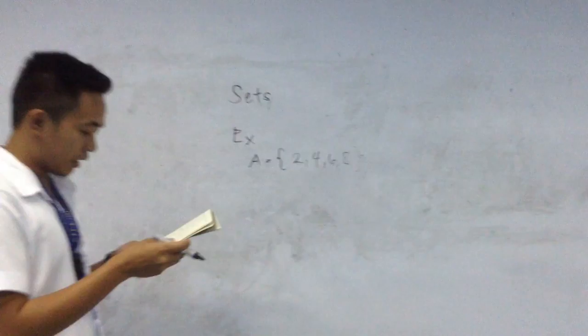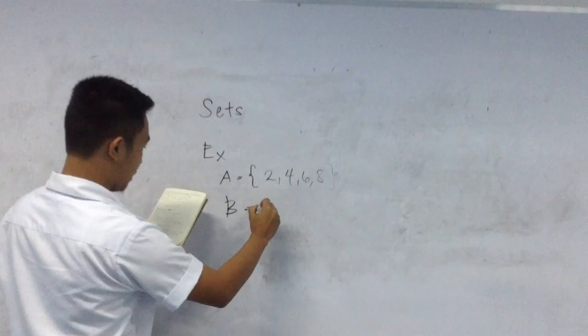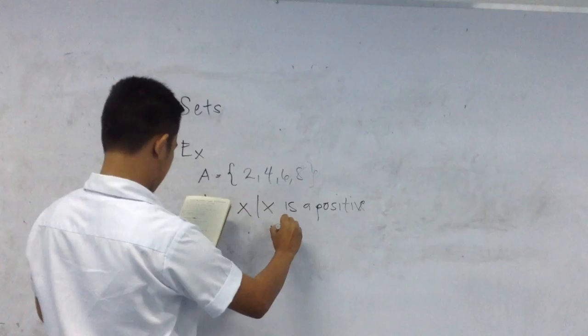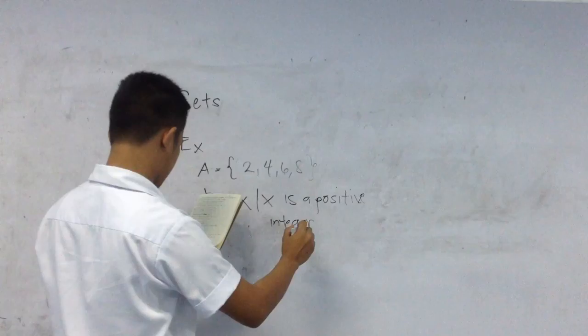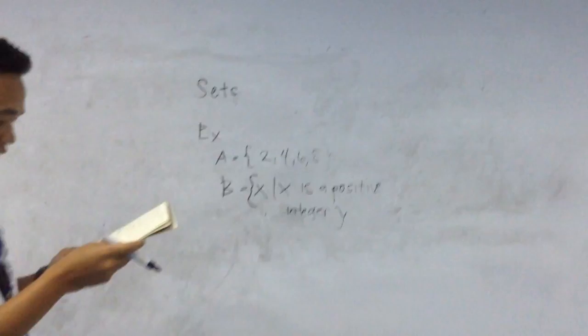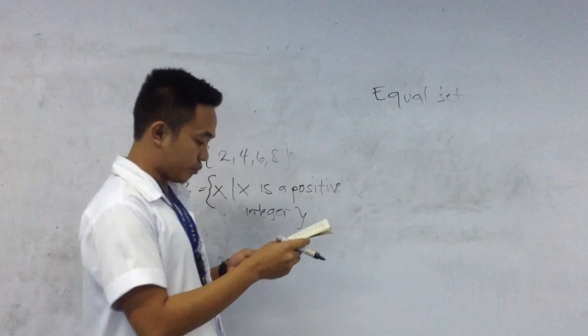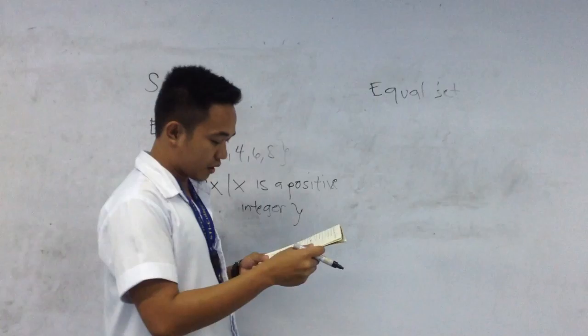Sets depend on the collection of objects, denoted by set-builder notation. For example, A is equal to {1, 2}. Then B is equal to X. Then A is equal to Z.